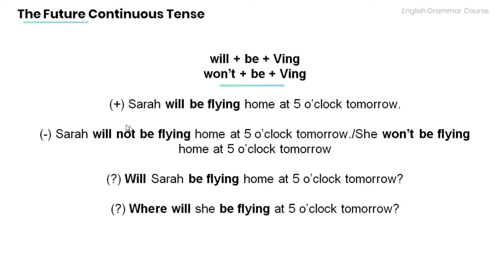Positive sentence: Sarah will be flying home at 5 o'clock tomorrow. Negative sentence: Sarah will not be flying home at 5 o'clock tomorrow, or she won't be flying home at 5 o'clock tomorrow. Question form: Will Sarah be flying home at 5 o'clock tomorrow? Another question: Where will she be flying at 5 o'clock tomorrow?